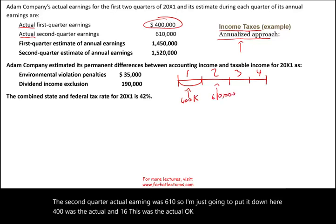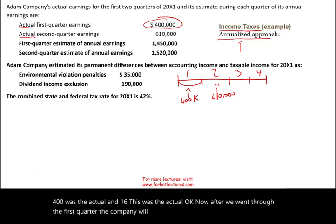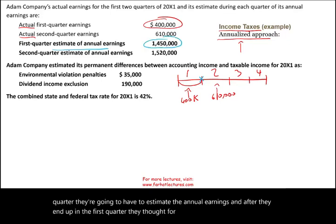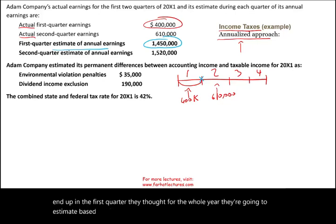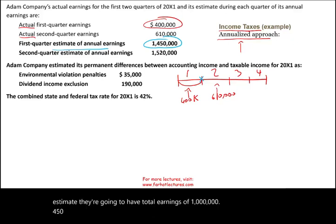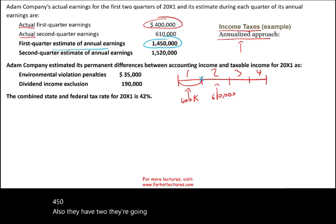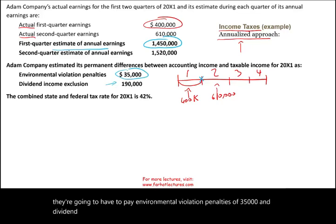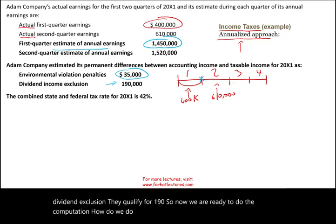Once we are done with the first quarter, the company will have to estimate the annual earnings. After the first quarter, based on projections, they estimate they're going to have total earnings of one million four hundred and fifty thousand. They also have two permanent differences: environmental violation penalties of thirty-five thousand, and a dividend exclusion they qualify for of one hundred and ninety thousand.